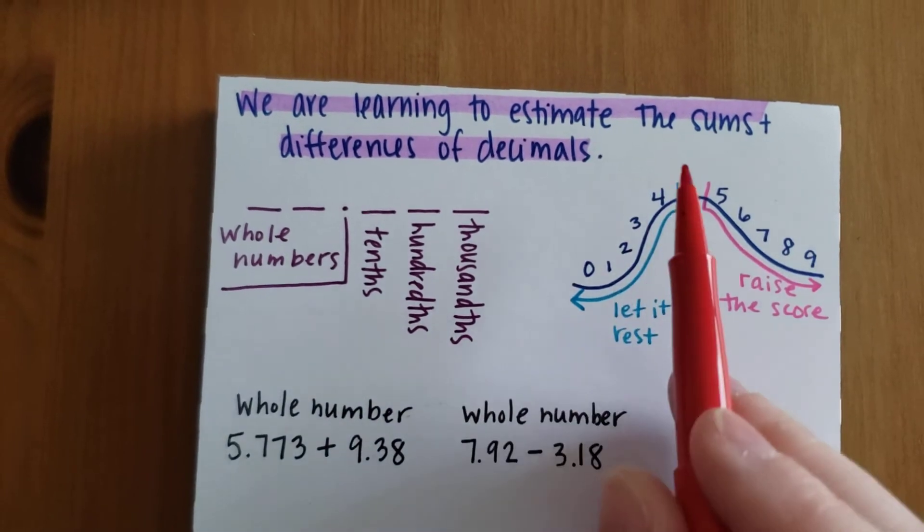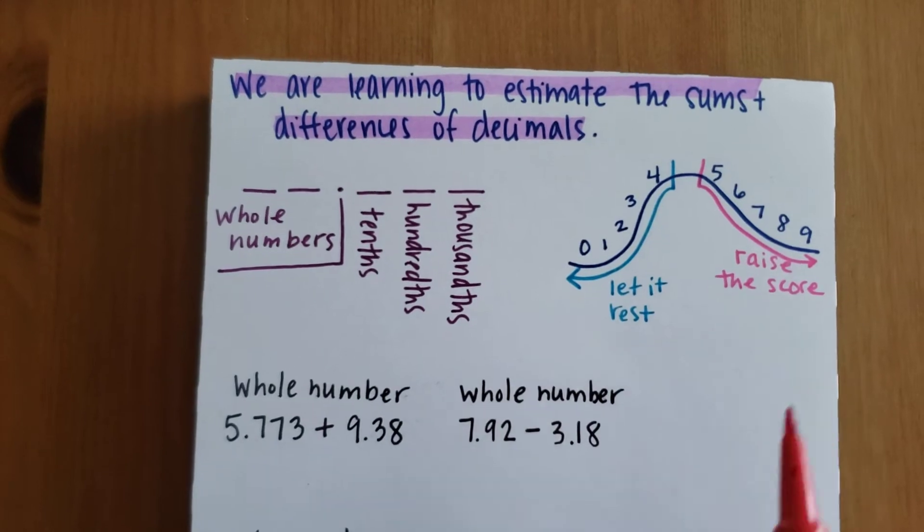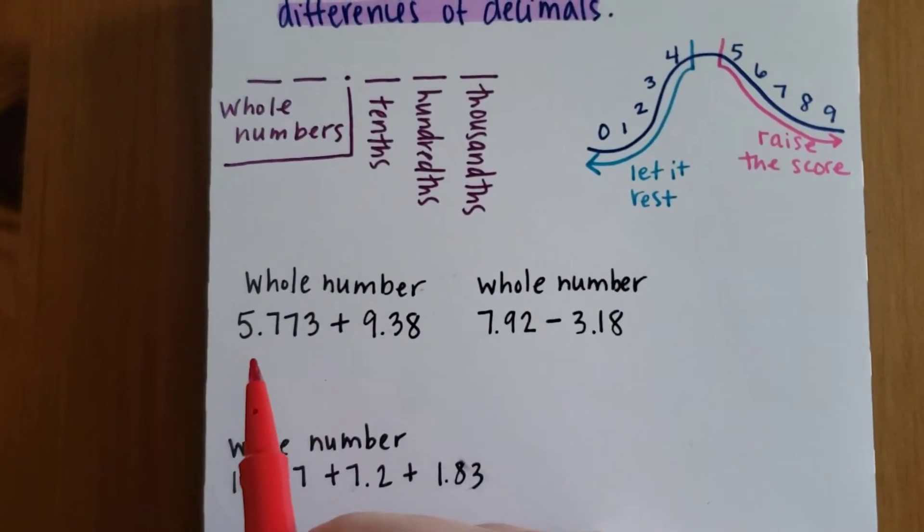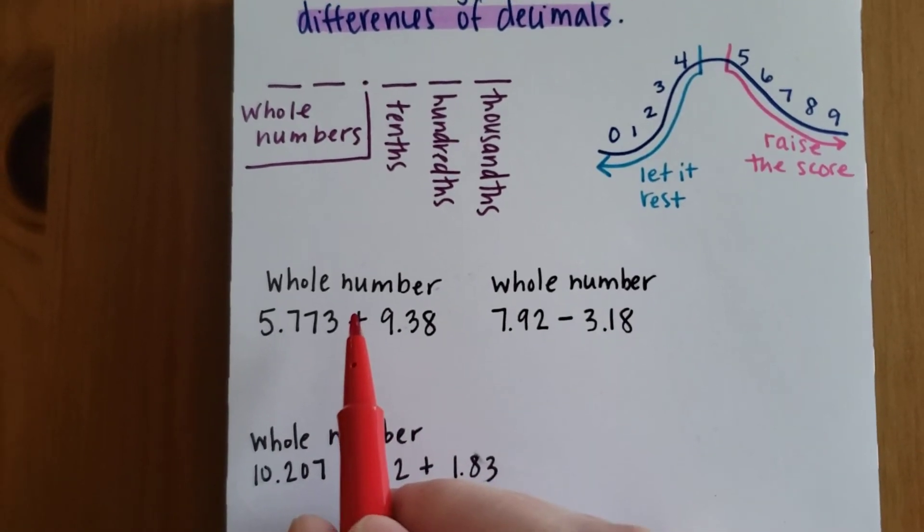I also included our rounding guide: four or less, let it rest; five or more, raise the score. So if we have the numbers 5.773 plus 9.38 and we are rounding to the nearest whole number,